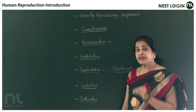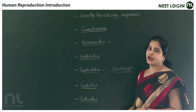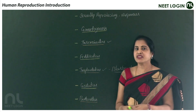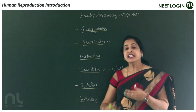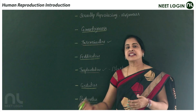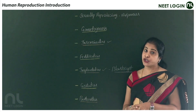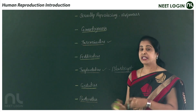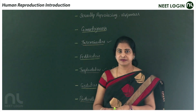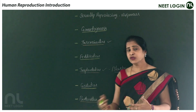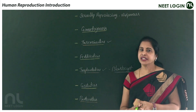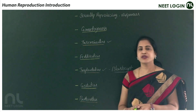The last reproductive event is parturition — the process of giving birth to the young one. This is distinct from micturition, which refers to the discharge of urine.